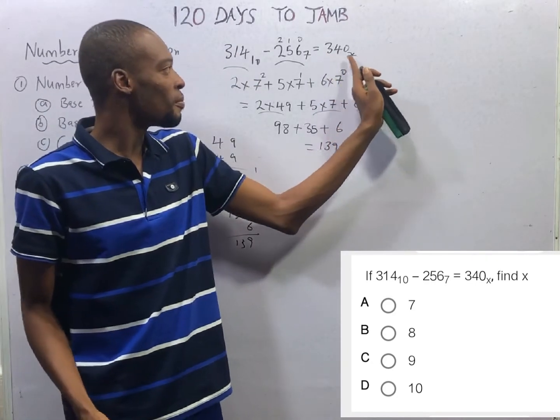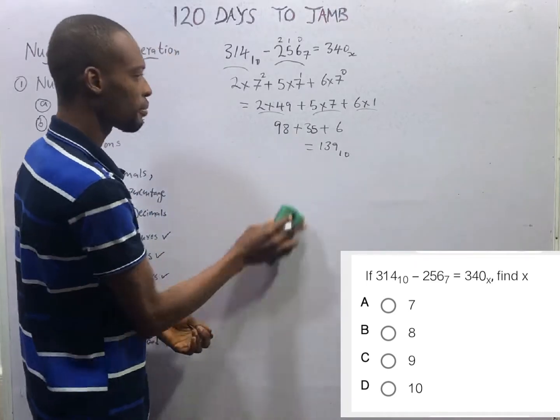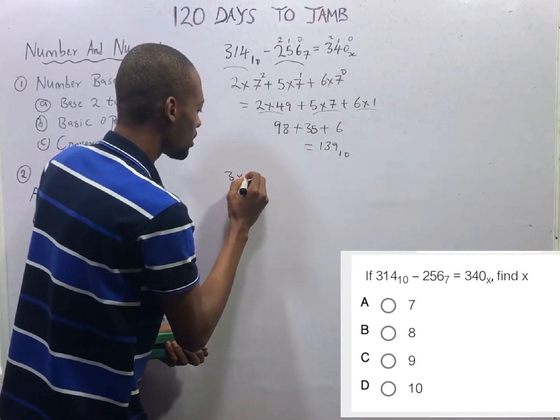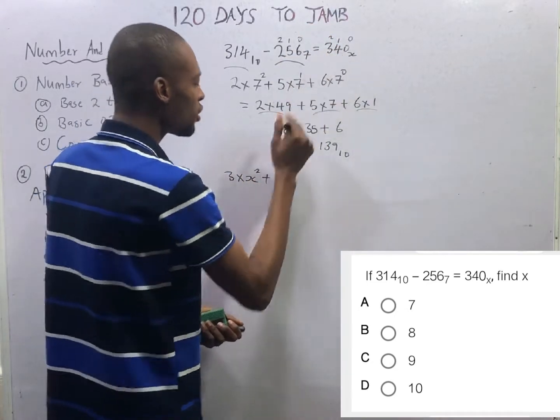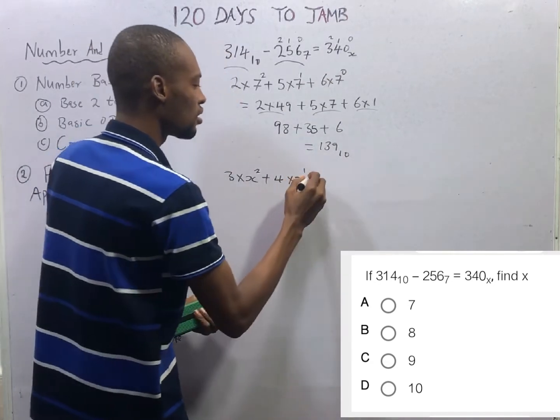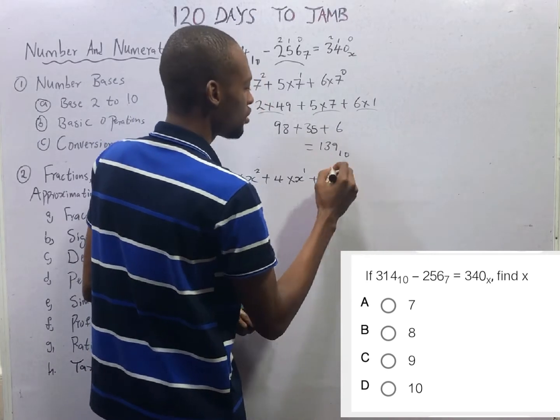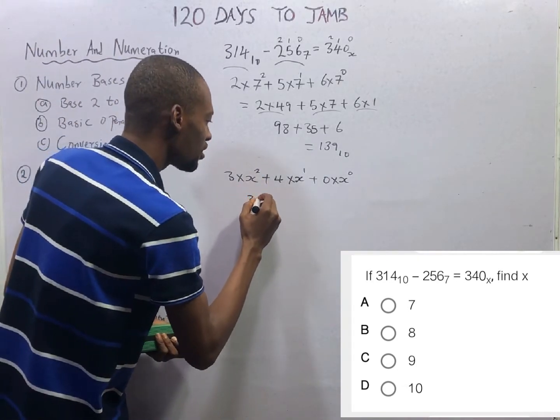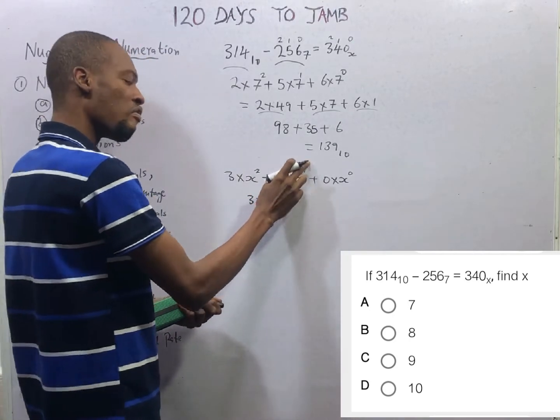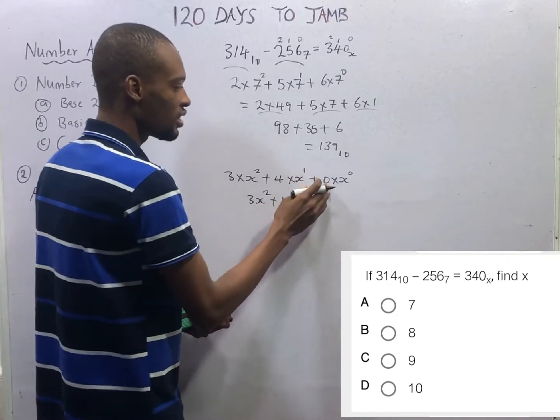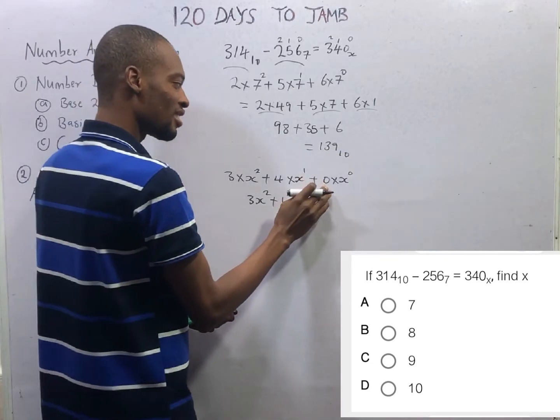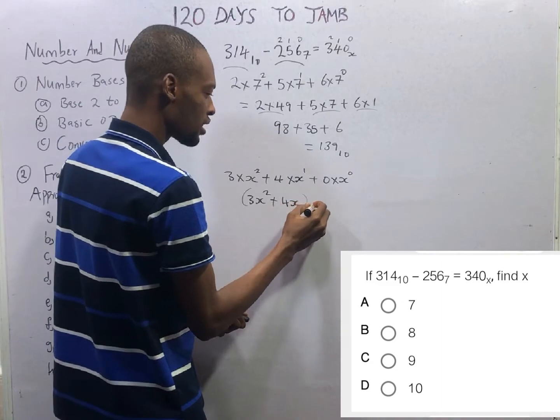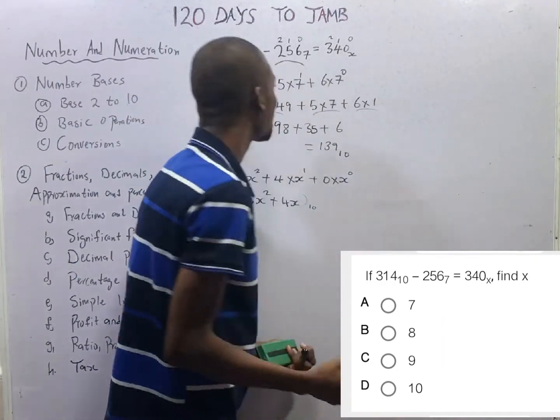Next let's convert base S to base 10, still the same step. 0, 1, 2, the first number times the base times S raised to the power of 2, plus the second number times the base raised to the power of 1, plus the third number 0 times the base raised to the power of 0. Now this is S raised to the power of 2 is S squared, 3 times S squared, that is 3S² plus 4S, 0 times 1 is 0. Which means 340 base S equals 3S² plus 4S base 10.